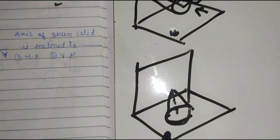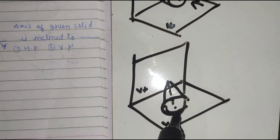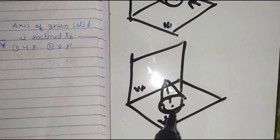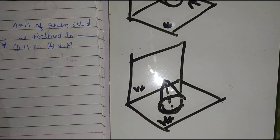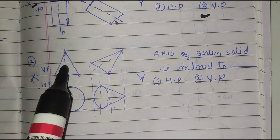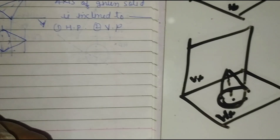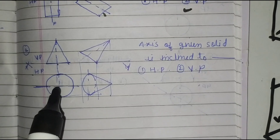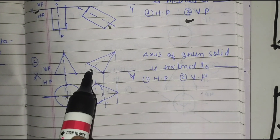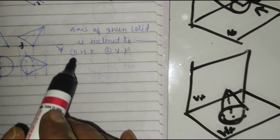Here the axis of the cone — its base is resting on HP. The axis of the cone is perpendicular to HP and parallel to VP. So a single point is observed in the front view, and the full vertical axis is visible in the top view. In the second phase, this axis of the object is inclined to HP. Here the answer will be HP.